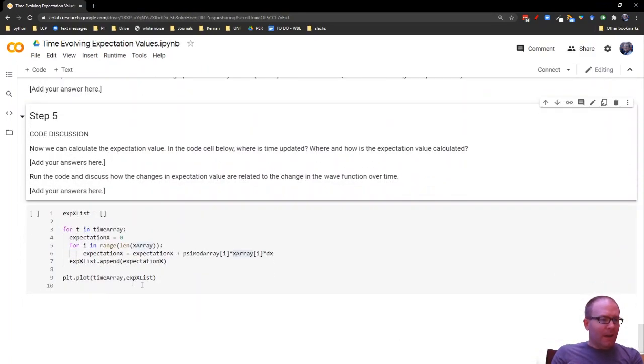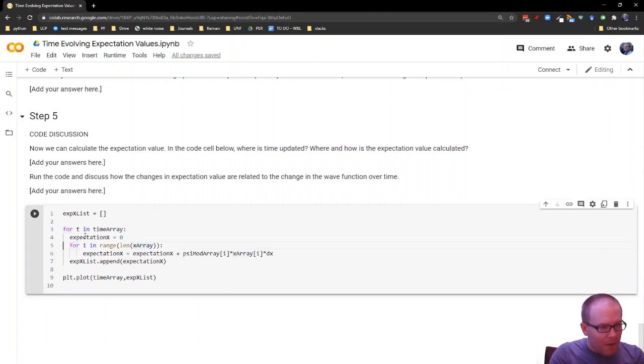Then you scroll down here, and this is where you actually calculate the expectation value of x. It's the same Riemann sum that you were using before. The difference is now it's being looped inside of a time array so that you get several different snapshots of this value over the course of time. It's going to graph your expectation value versus time here. So for each one of those snapshots you had of the wave function, you're going to get a different data point for the expectation value of x. And this is really what's going on in the quantum mechanics universe.